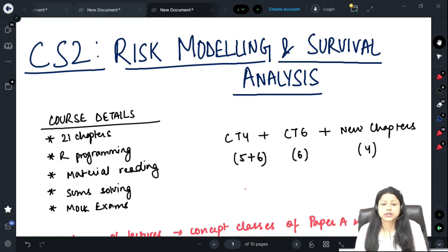This is actually one of the most difficult papers in the entire 13 actuarial papers which you have. The only thing difficult here is the topics are independent of each other. There are 21 chapters that we have to cover.